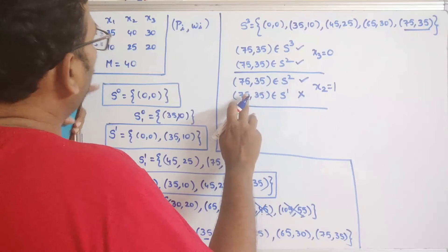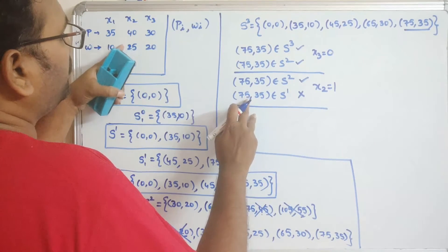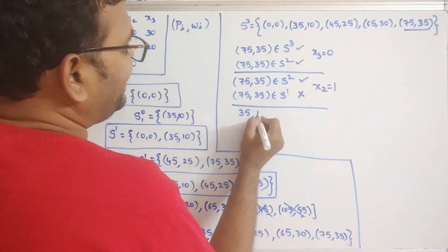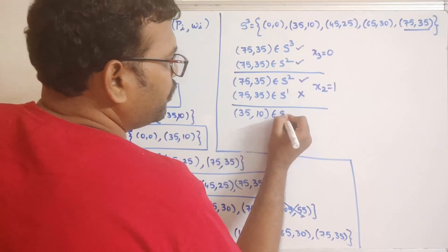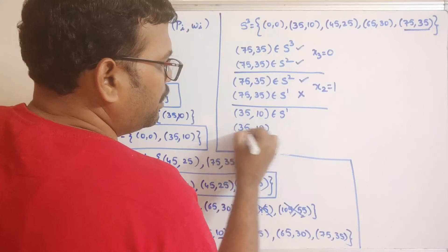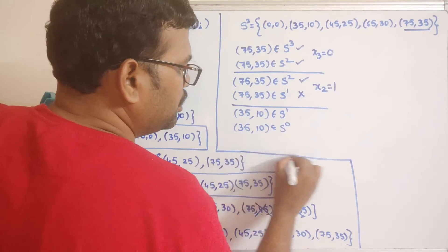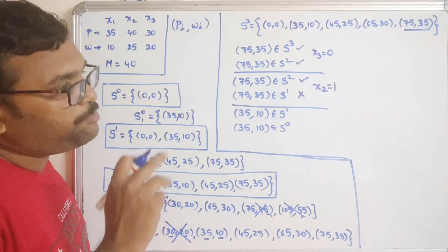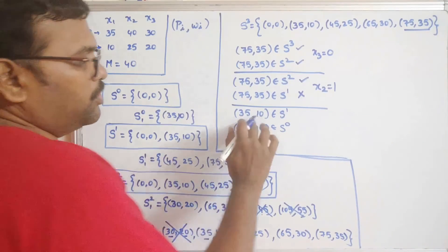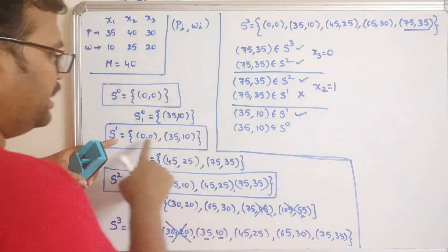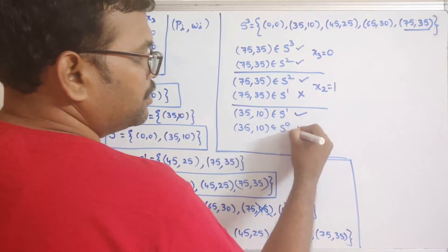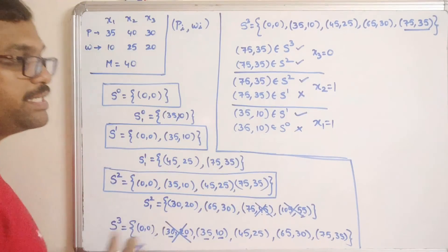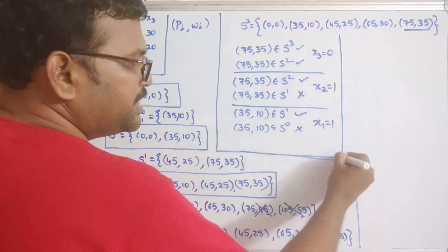Since object 2 was inserted, we remove its profit and weight (40, 25) from (75,35) to get (35,10). We check if (35,10) is in S1 — yes. We check if (35,10) is in S0 — it is not. So object 1 must also be inserted into the sack.